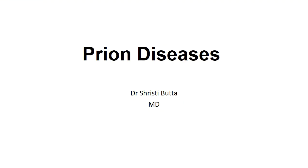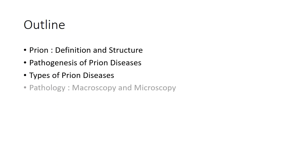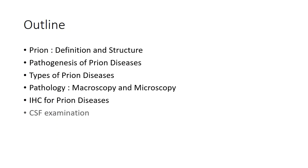Good morning. We are back again with our neuropathology lecture series and today we will be discussing prion diseases. We plan to cover the definition and structure of prions, pathogenesis of prion diseases, types of prion diseases, pathology including macroscopic and microscopic findings, immunohistochemistry for prion diseases, CSF examination in prion diseases, and an overview of Creutzfeldt-Jakob disease.